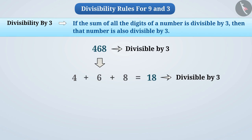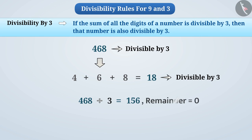To verify this, we divide 468 by 3. We find that by division, we get quotient 156 and remainder 0. Since the remainder is 0, we can say that 468 is divisible by 3.